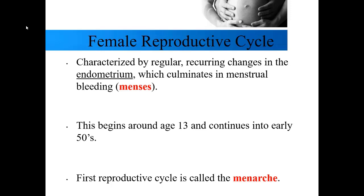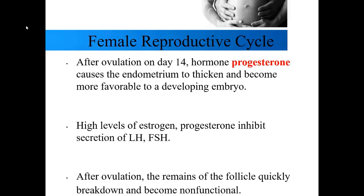The menstrual cycle begins around age 12 or 13 when a woman goes through puberty and continues into her 50s approximately. The name for the first reproductive cycle is called the menarche. After ovulation on day 14 of the cycle, the hormone progesterone causes the endometrium to become very thick, providing a favorable environment for a developing embryo in case pregnancy occurs. High levels of progesterone and estrogen then inhibit secretions of LH and FSH to prevent another ovulation from occurring — you don't want to ovulate more than one secondary oocyte in one month.